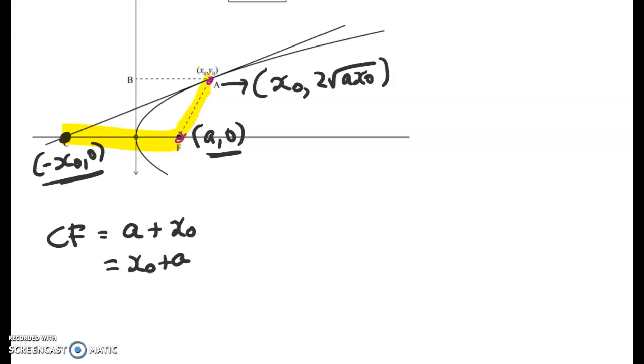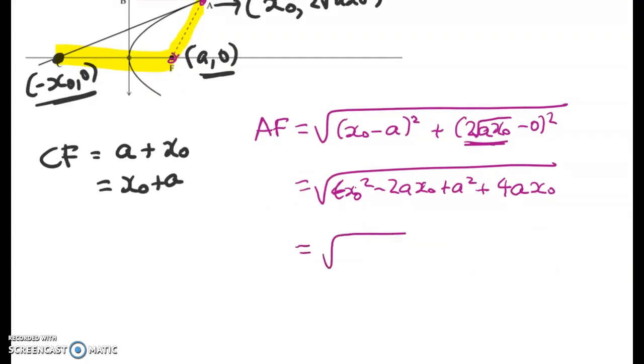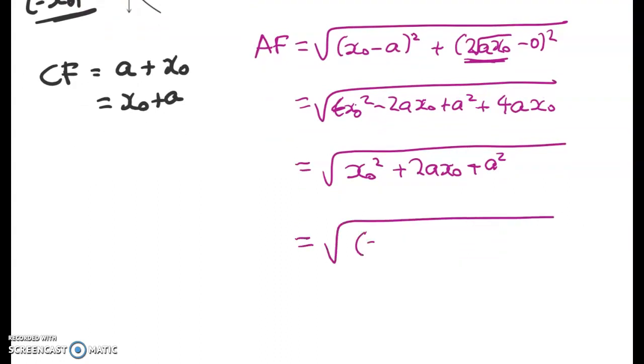CF is the distance between those two points, which is simply a plus x₀, or I'll just write it the other way around, x₀ + a. How do we get the distance between F and A? Well, that's Level 2 coordinate geometry. We're going to apply Pythagoras's theorem. So distance AF equals this: the difference in the x values squared plus the difference in the y values squared. Expanding that out gives me x₀² - 2ax₀ + a² + 4ax₀. Now this is starting to look great because we've got a perfect square here: x₀² + 2ax₀ + a².